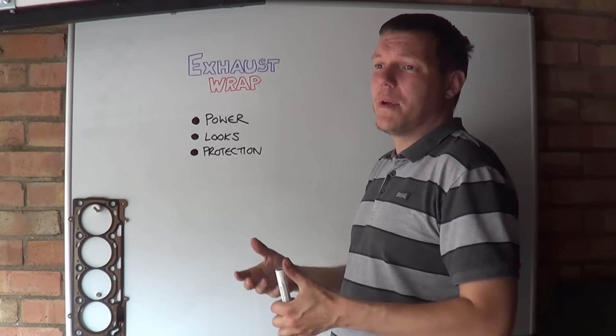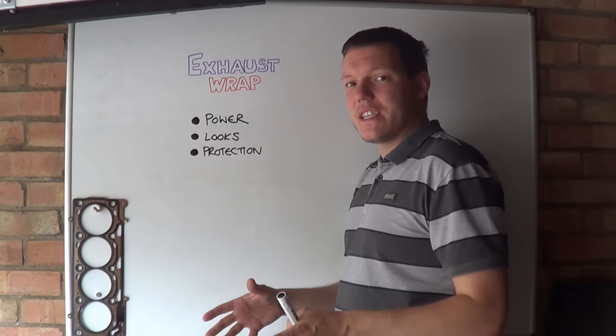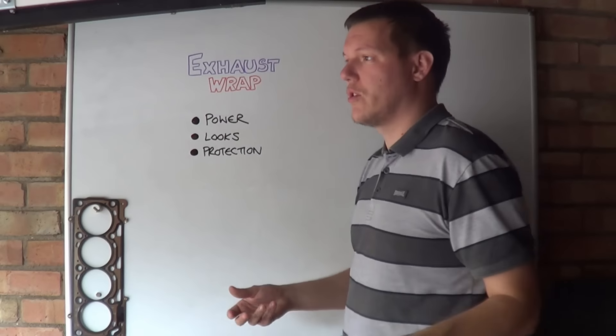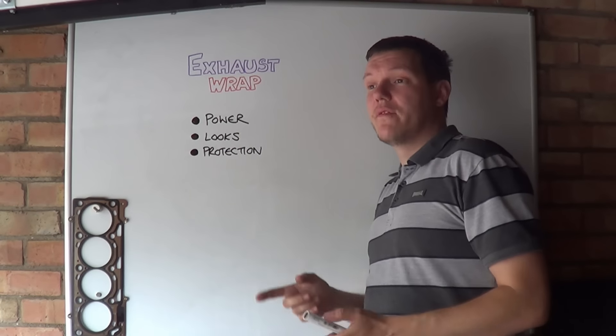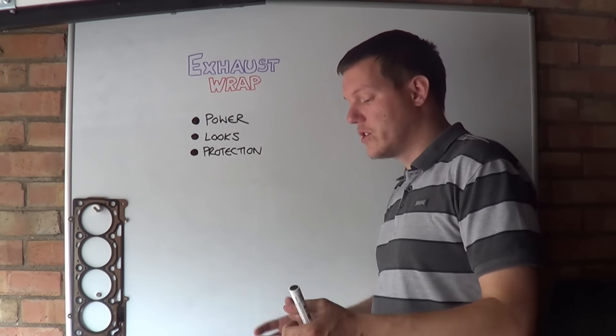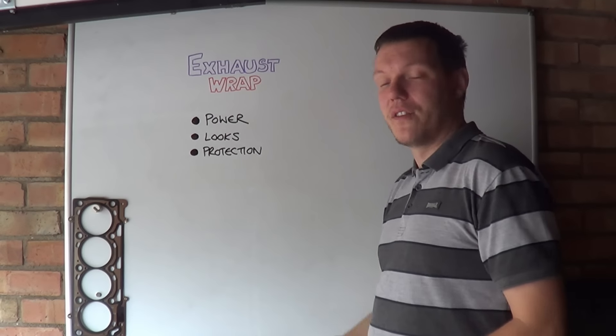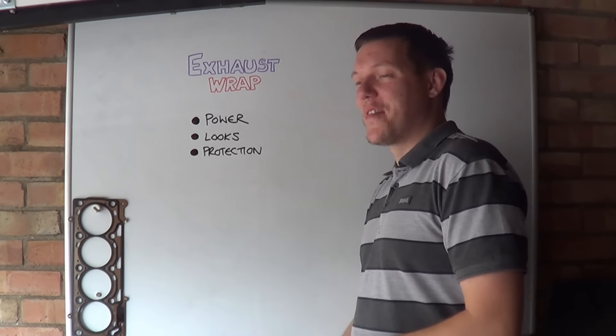The other thing is looks. People want that old rustic 1960s cafe racer kind of look, or they want their exhaust pipe to be purple or orange or green. They just like the look of it. And then the third reason is protection. Especially with a lot of these cruisers and Harleys, where the footpegs are and where the exhaust is you end up burning your leg on. You can see on some people's exhaust melted leather where their boots have been.